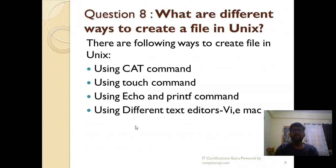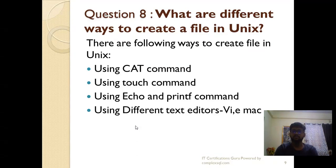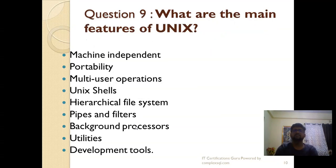What are the different ways to create a file in Unix? There are multiple ways: using the cat command, using the touch command, using the echo and printf commands. You can also use a text editor like vi or emacs to create a file in Unix. So there is not only one way — there are multiple ways.